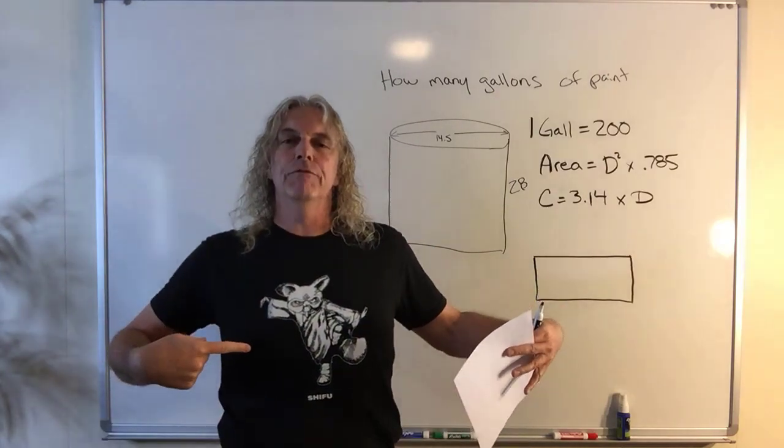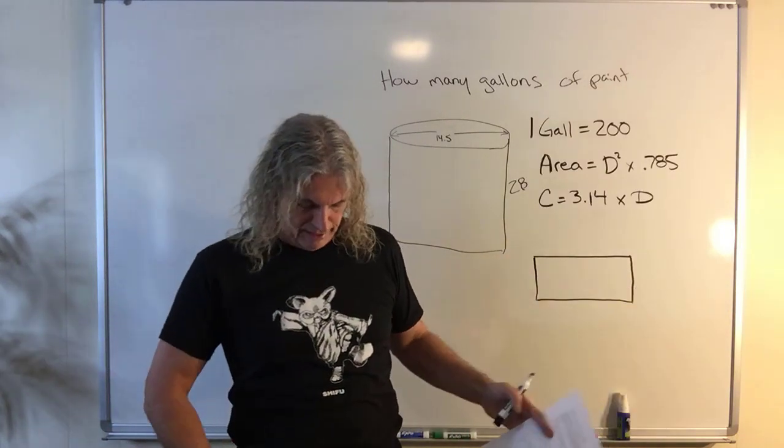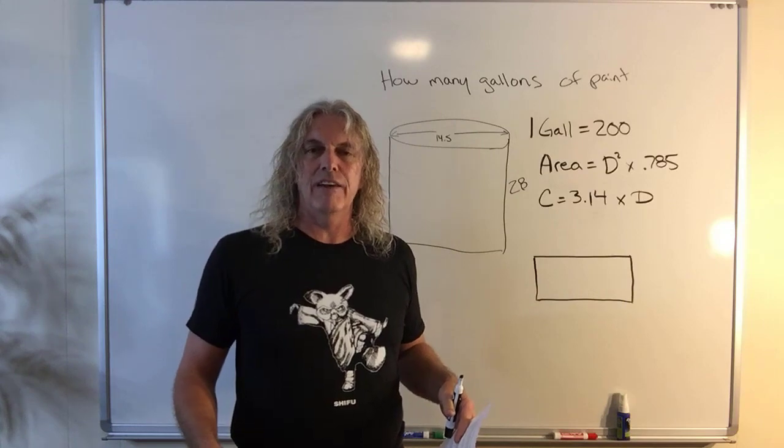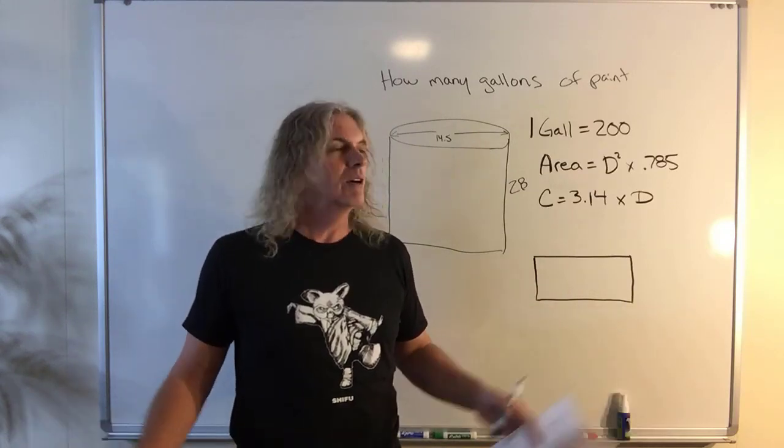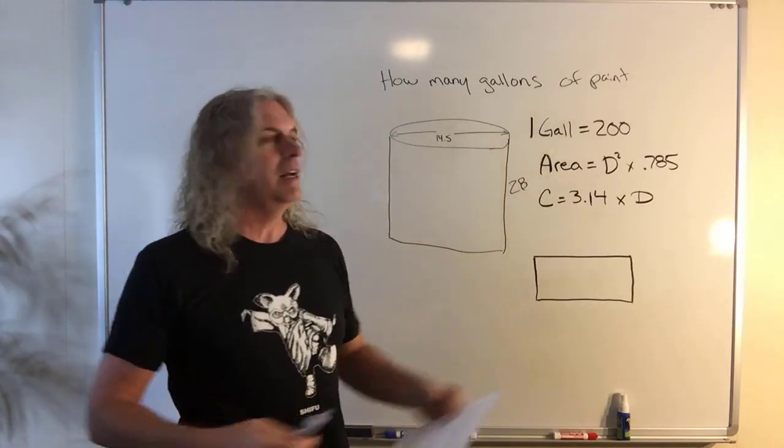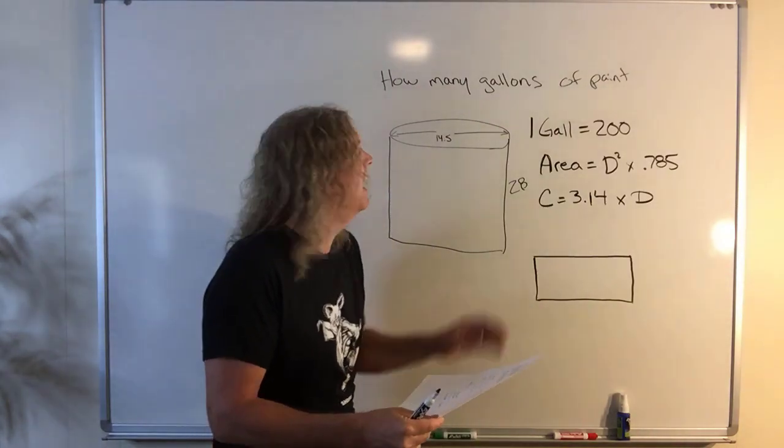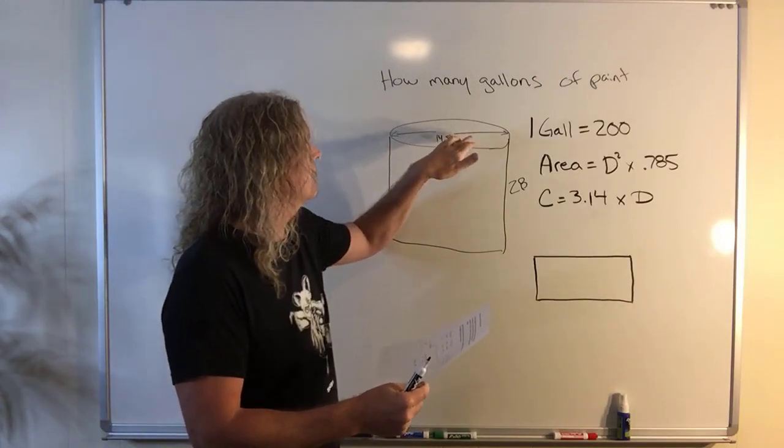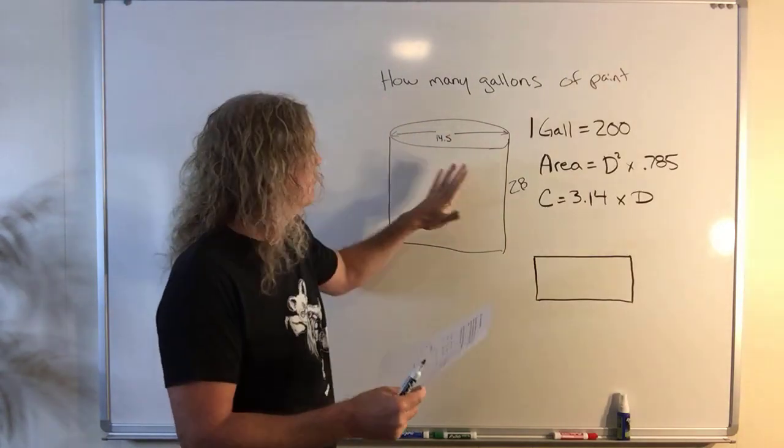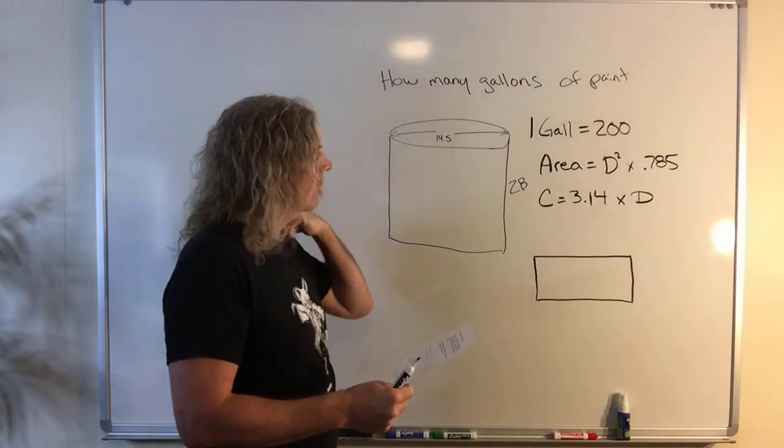By the way, I got to point out the Sifu shirt here my daughter got for me. It's my first chance to bust it out in a video. It's spelled a little different with the H instead of just S-I-F-U. There's two ways of spelling it both, but my shirt is this way. So anyway, that's my new shirt. Not that anybody cares. What we got to do is find out the outside surface area of the outside of the tank and the top of the tank. Let's start with that.